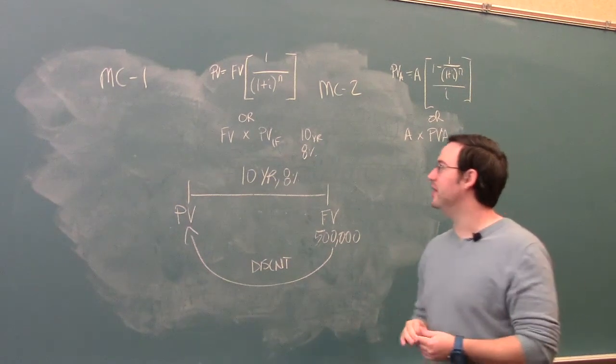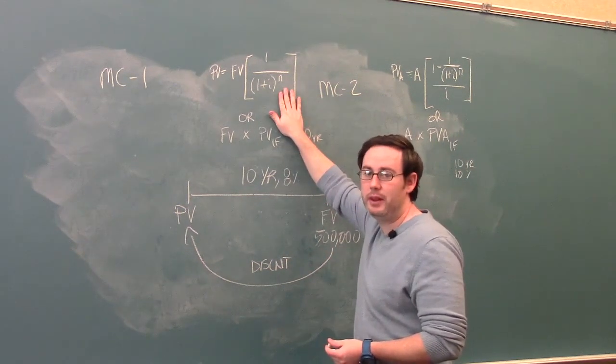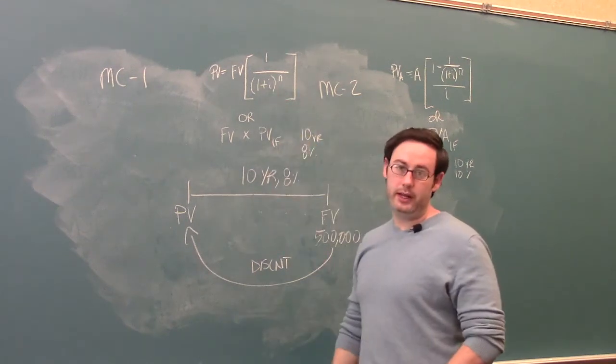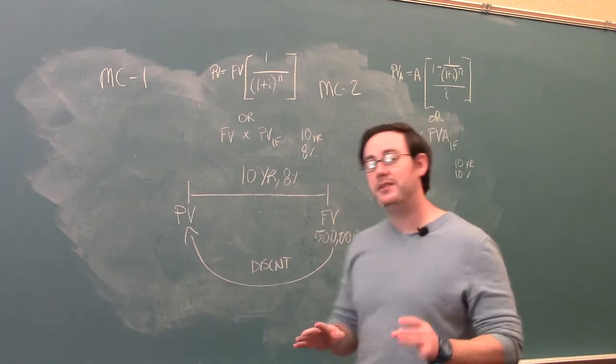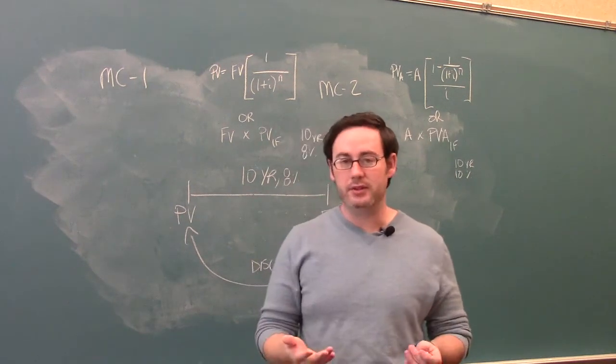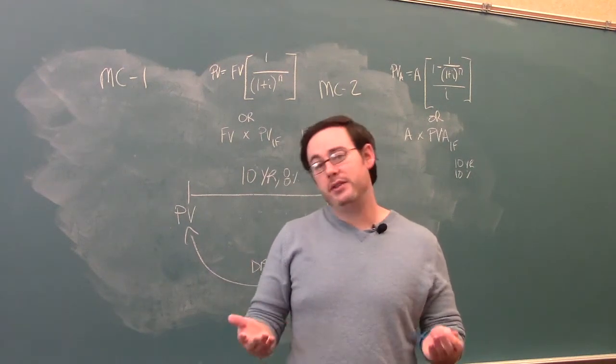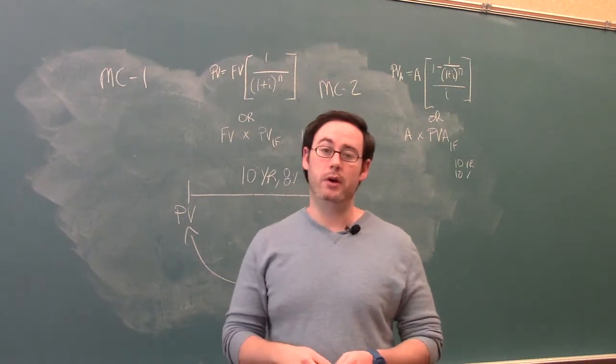There are a couple ways that we can do this. We can plug information that we have in these formulas, meaning that i is going to be your interest rate, and N is going to be your number of periods. But we have tables that we use, common tables, that have already done this for us. They're called the time value of money tables. There's four of them that we deal with in our book.